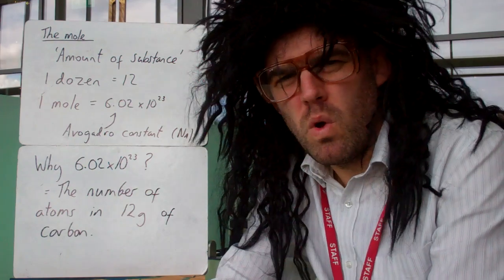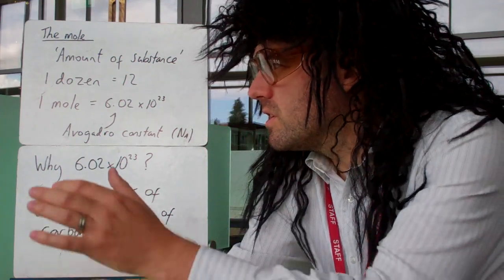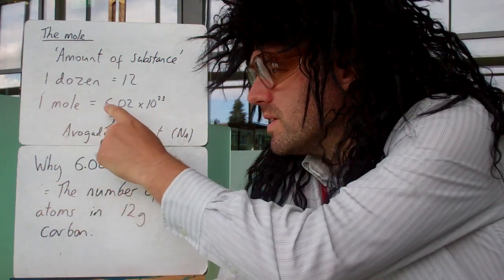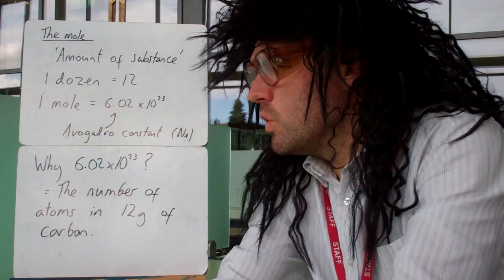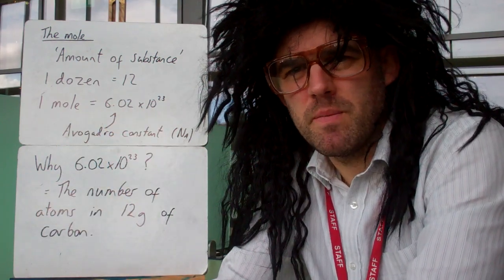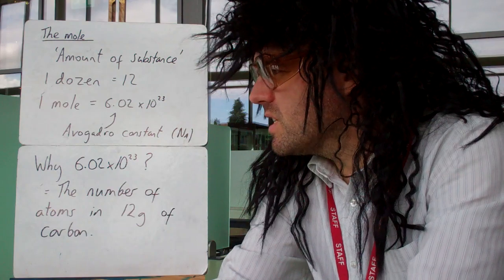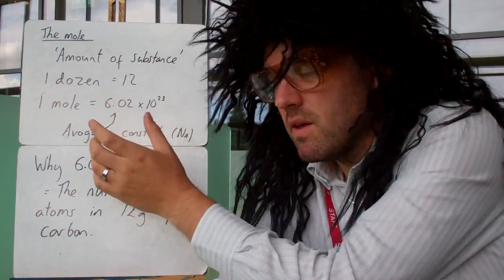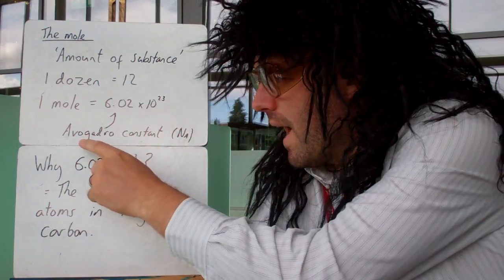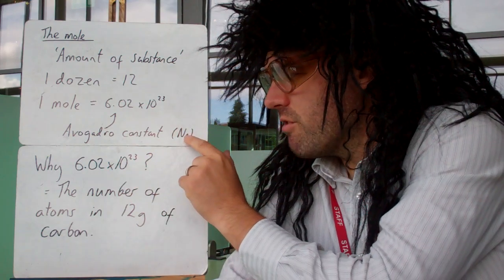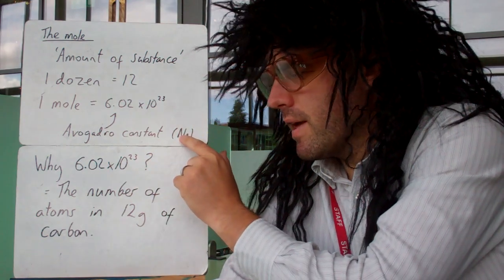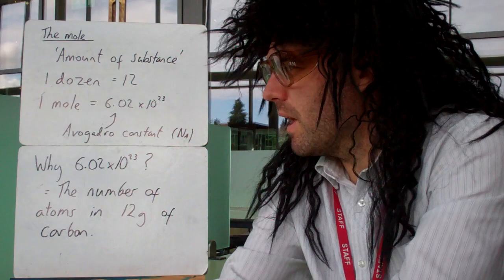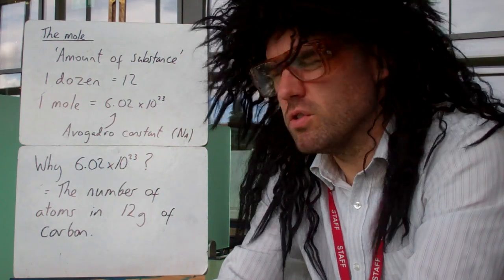A mole is a word that represents a number. Just like a dozen represents 12, a mole is 6.02 times 10 to the 23. This number is very, very big. It's called Avogadro's constant, and sometimes that's represented by a capital N with a subscript capital A.